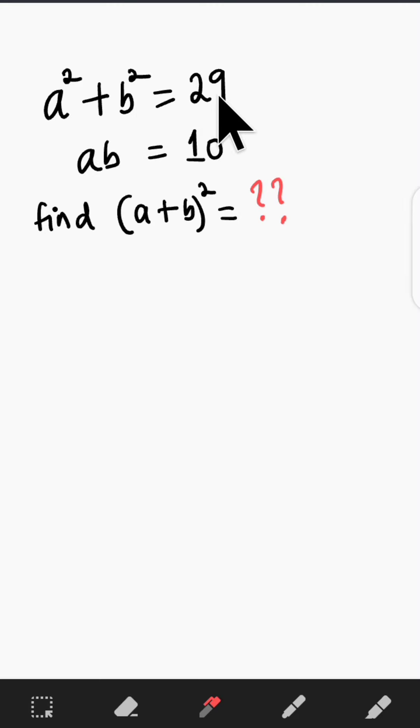a squared plus b squared is equal to 29 and ab is equal to 10. We are asked to find a plus b all squared.